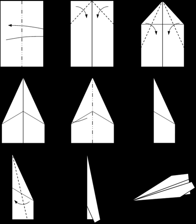A paper plane, paper aeroplane in the UK, paper airplane in the US, paper glider, paper dart, or dart is a toy aircraft, usually a glider made out of folded paper or paperboard.